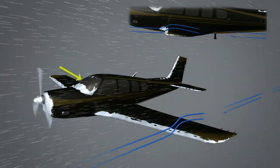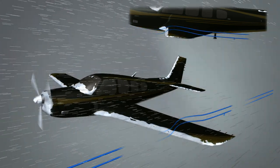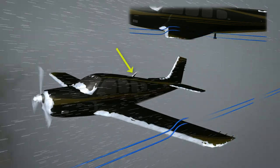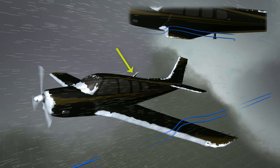On the windscreen, ice limits visibility. On the antennas, ice can break them off or hamper navigation and communication.